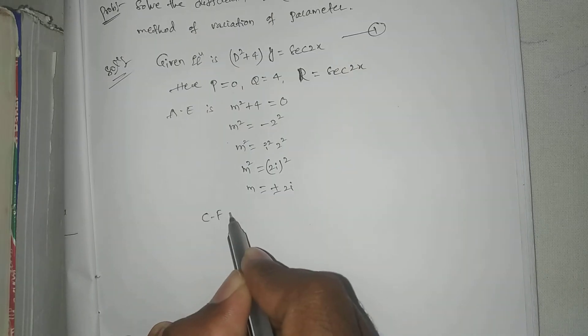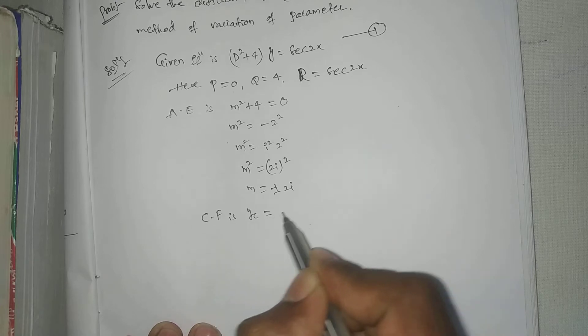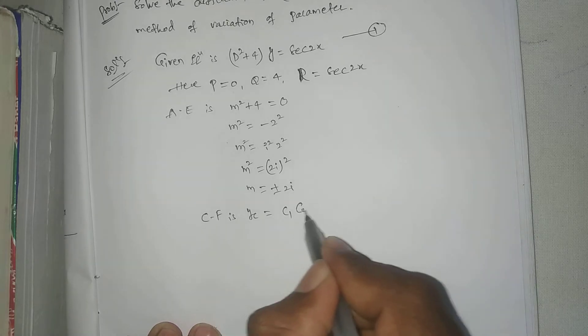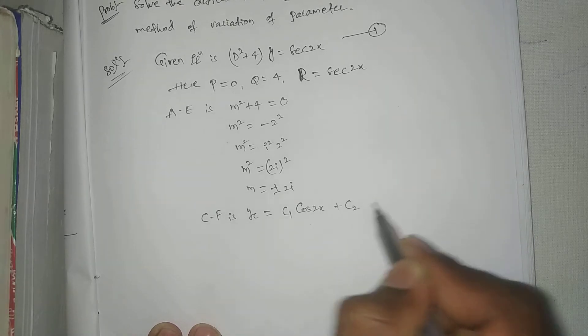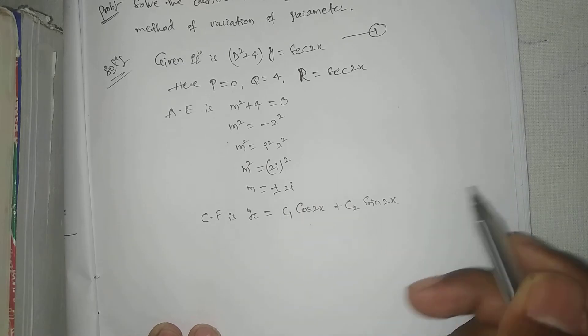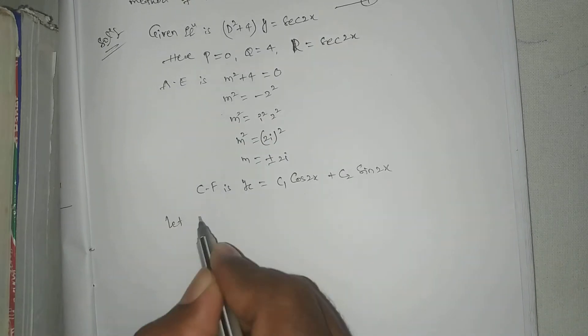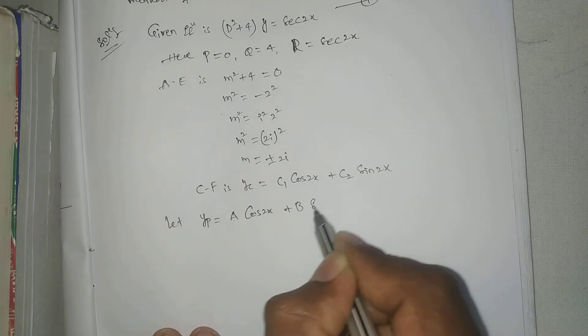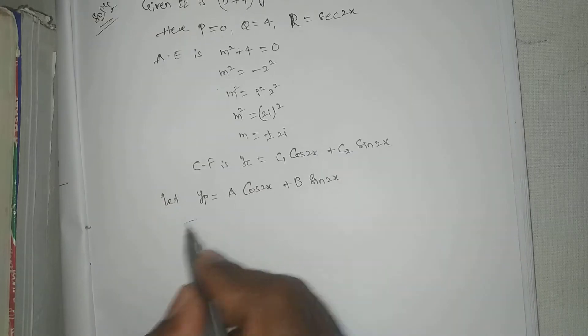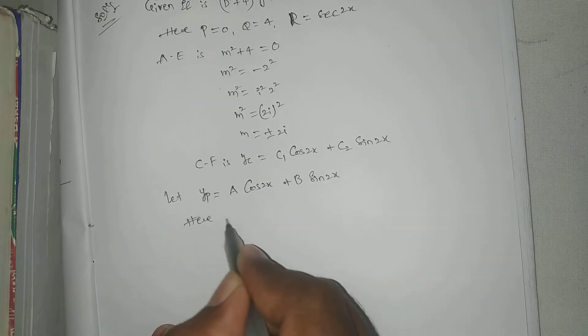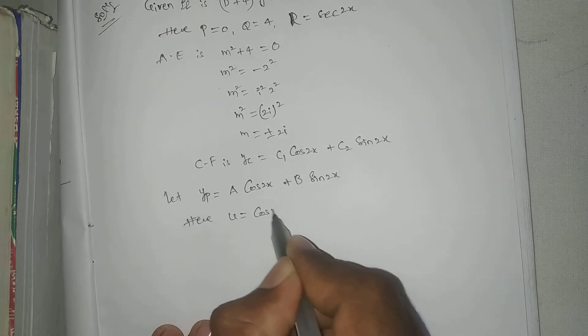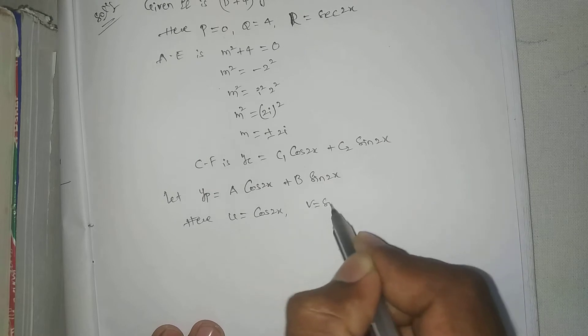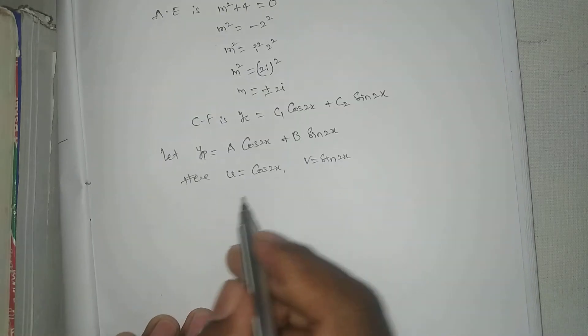Right, complementary function is yc equal to c1 cos 2x plus c2 sin 2x. Let yp, particular integral, a cos 2x plus b sin 2x. Here, u equal to cos 2x, v equal to sin 2x.